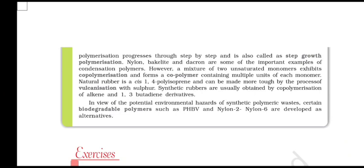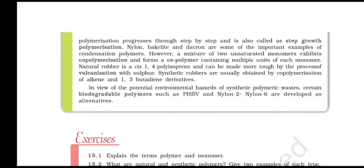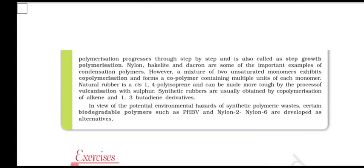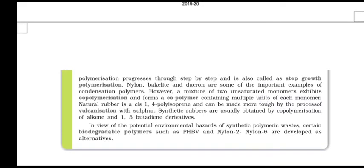Nylon, Bakelite, and Dacron are some of the important examples of condensation polymers. A mixture of unsaturated monomers exhibits copolymerization and forms a copolymer containing multiple units of each monomer. Natural rubber is cis-1,4-polyisoprene and can be made tough by the process of vulcanization with sulfur. Synthetic rubbers are usually obtained by copolymerization of alkenes and 1,3-diene derivatives. In view of potential environmental hazards of synthetic polymer waste, certain biodegradable polymers such as PHBV, Nylon 2 and Nylon 6 are developed as alternatives.